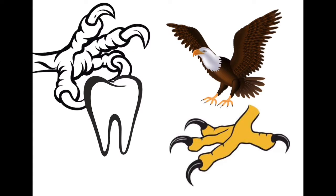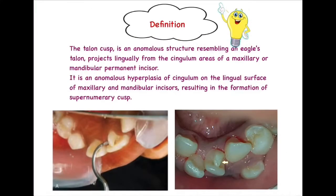Before moving to the definition, let's first try to understand what this terminology basically refers to. Talon means an eagle's talon. I have put up pictures here of the claws of the eagle — you can see the projection, the nails which are on the toes. These nails are referred to as talon, an eagle's talon, and as this dental anomaly resembles the eagle's talon, it is named Talon's Cusp.